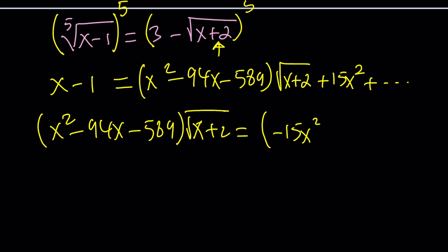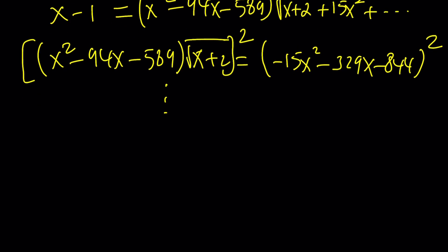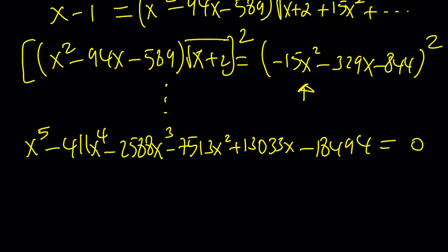And this will equal something quadratic. Eventually, I ended up isolating the radical this way. But, of course, I had to square both sides to get rid of all the radicals now. And this really becomes messy because you get a quartic from here. Here you will get a quartic multiplied by x, which is a quintic. So eventually, this is going to turn into a quintic equation. We get x to the fifth power minus 411x to the fourth power minus 2,588x to the third minus 7,513x squared plus 13,033x minus 18,494. And that is equal to zero.